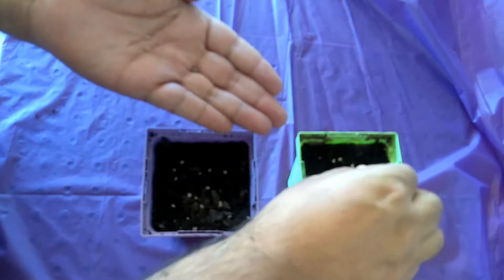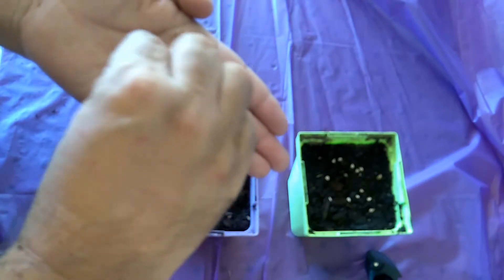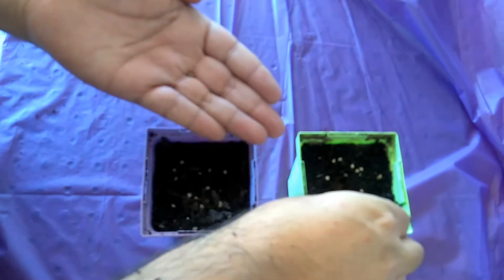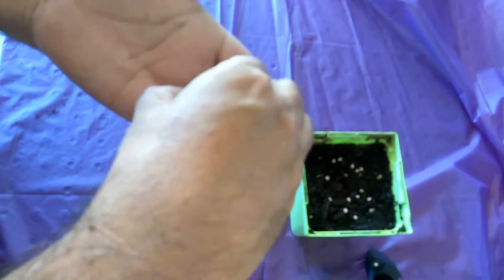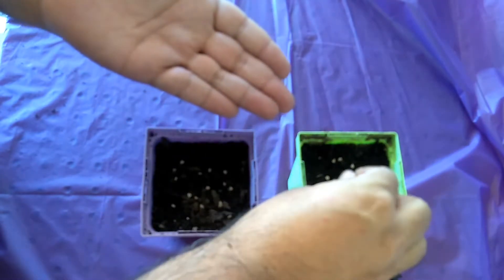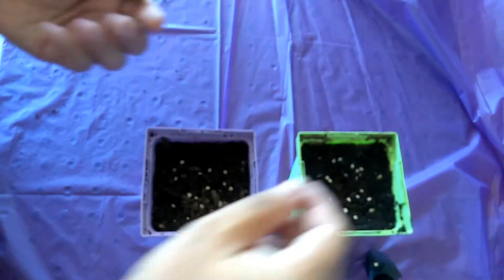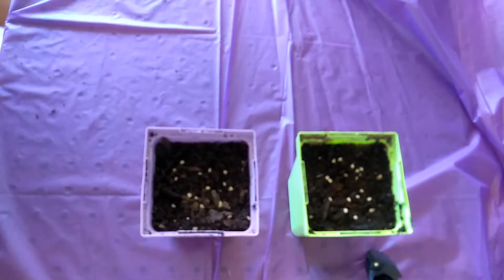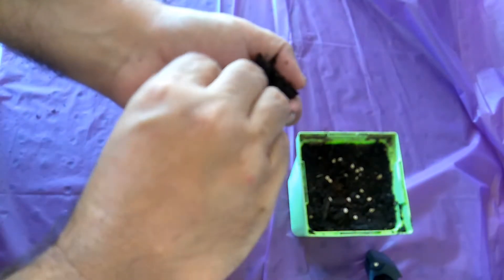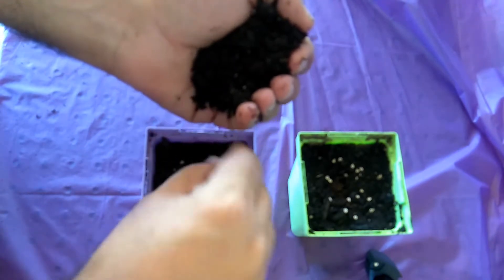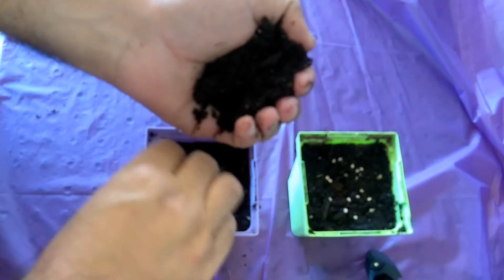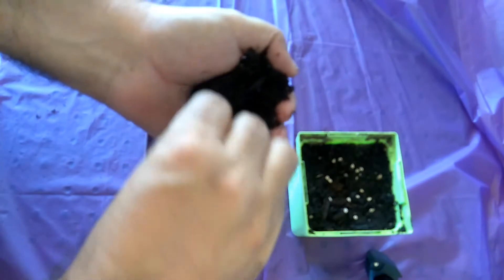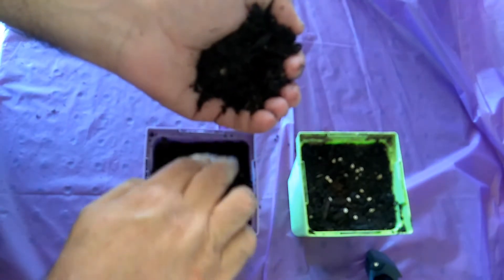And you can choose the strongest of the seedlings and that's pretty much it. Then you just grab some soil, sprinkle it over the top, make sure it doesn't go over a quarter inch like so.